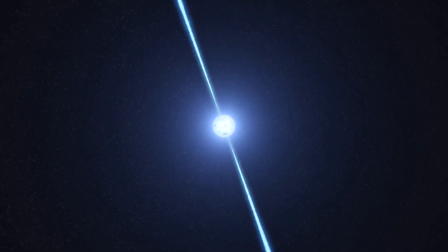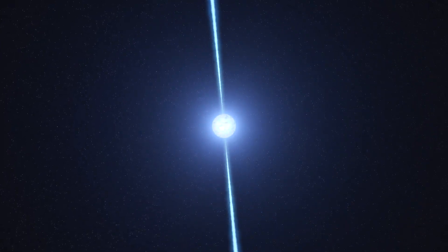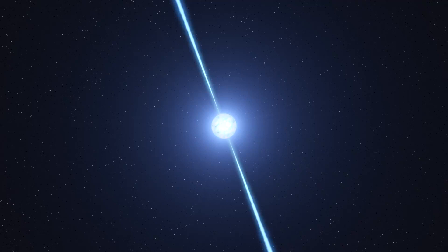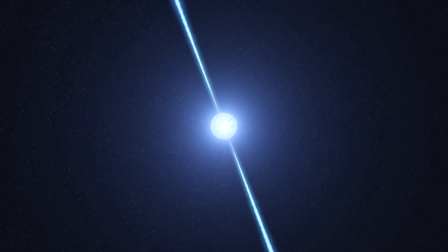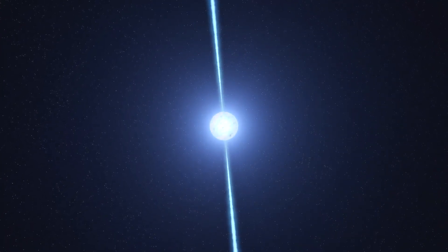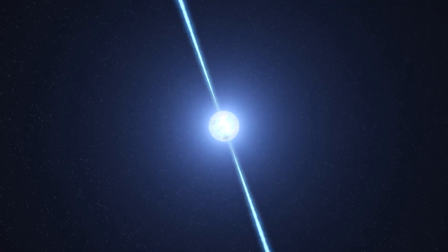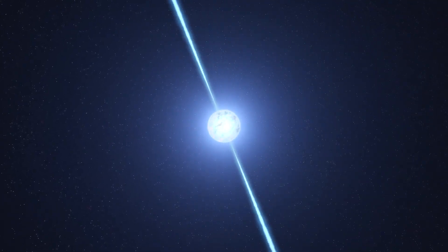A pulsar is the crushed core of an exploded star. Theorists have been trying to understand the details of how pulsars work ever since they were discovered in 1967, especially how they emit precisely timed pulses at radio-to-gamma-ray energies.